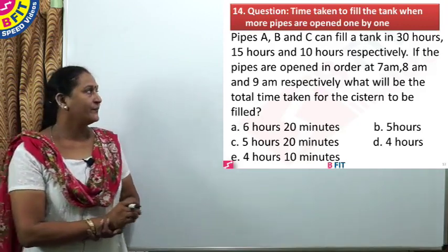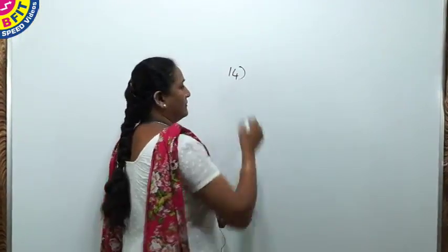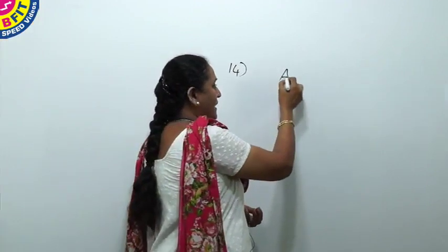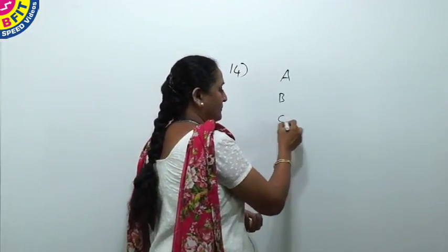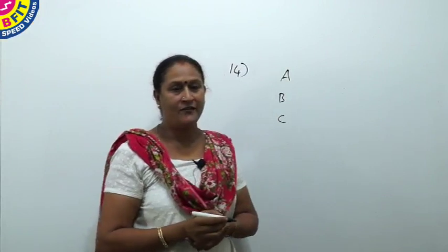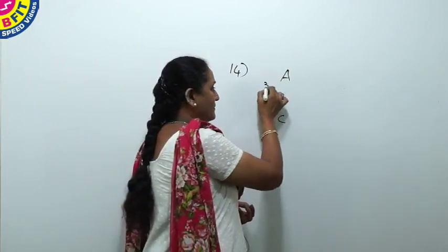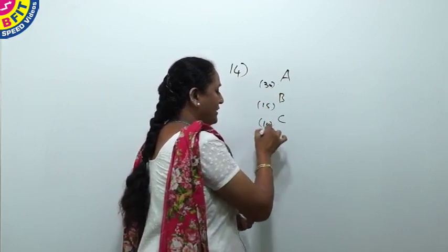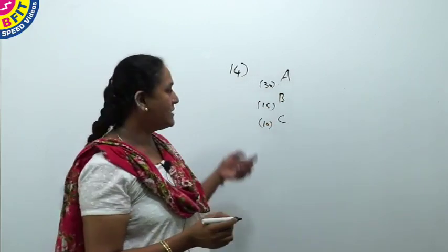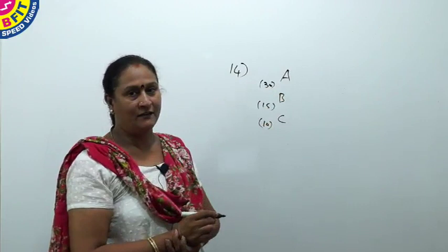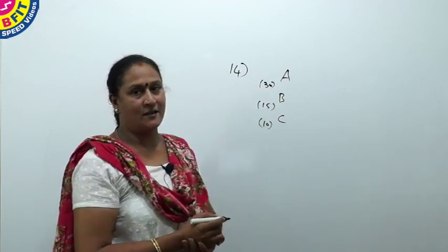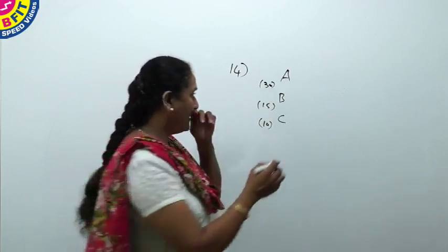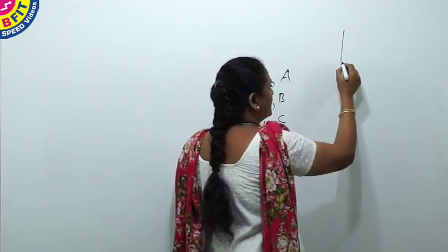We have 3 taps A, B and C. A can fill it in 30 hours, B can fill in 15 hours, C can fill in 10 hours. What is LCM for 30, 15 and 10? 30 is LCM because 15 and 10 are factors of 30. We can take capacity as 30 liters.